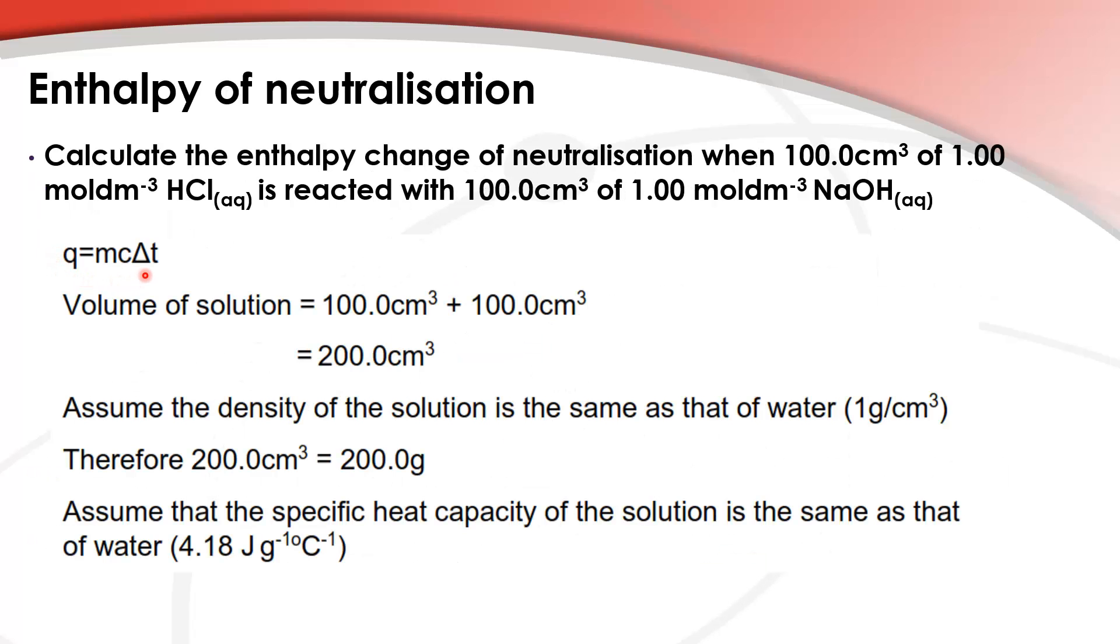So we're going to use Q equals MC delta T again and the volume of the solution, well you're adding a hundred centimeters cubed of hydrochloric acid to a hundred centimeters cubed of NaOH. So the total volume is 200 centimeters cubed. Now we assume the density of the solution is the same as that of water. Water has density of one gram per centimeter cubed therefore 200 centimeters cubed equals 200 grams.